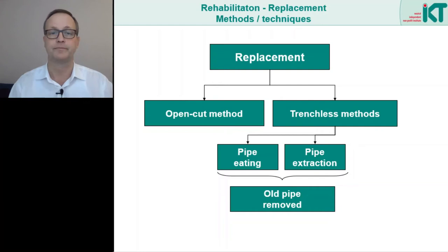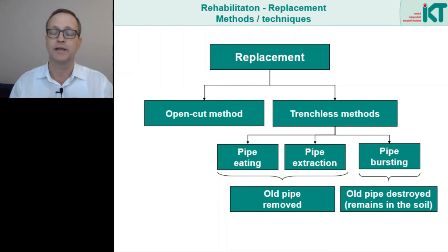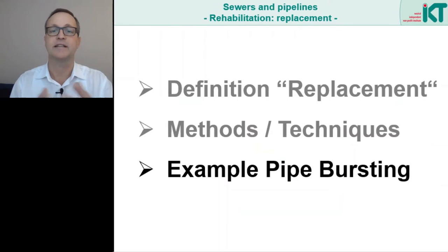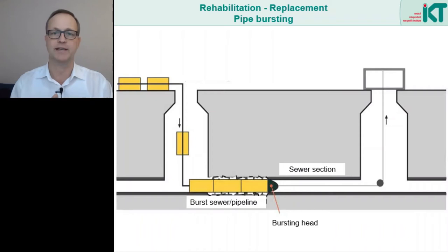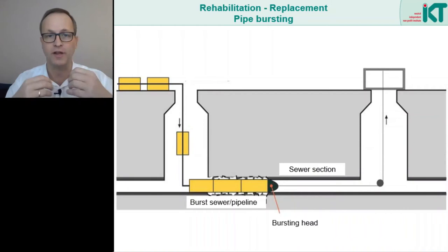Another method is pipe bursting. This method however is different — here the old pipe is destroyed and remains in the soil. As an example of replacement let's now take a closer look at the pipe bursting method. Here we see a schematic view of the bursting process. In this process a displacement body or bursting head is pulled through the old pipeline, destroying the old pipes in the process. Behind the bursting head the new pipeline is pulled in directly, and the pulling device is located in the target manhole.